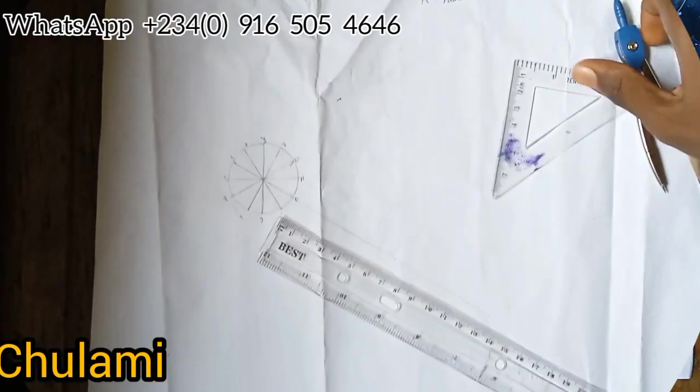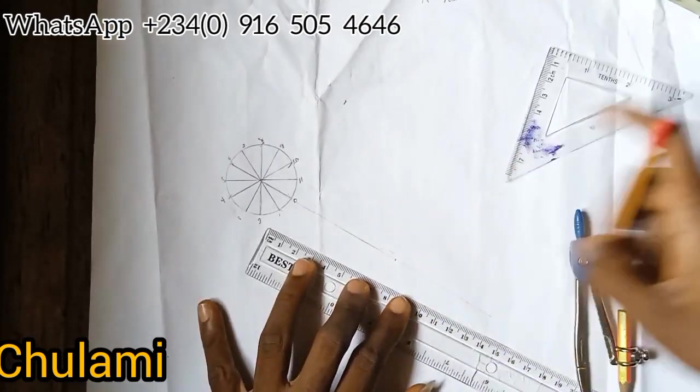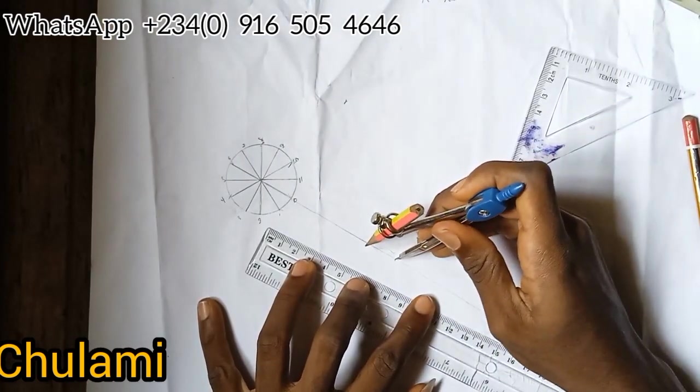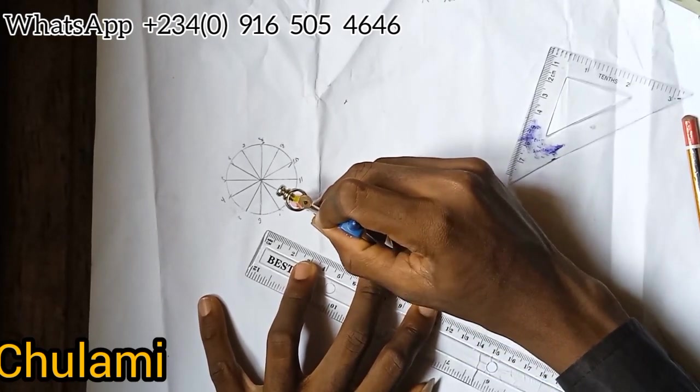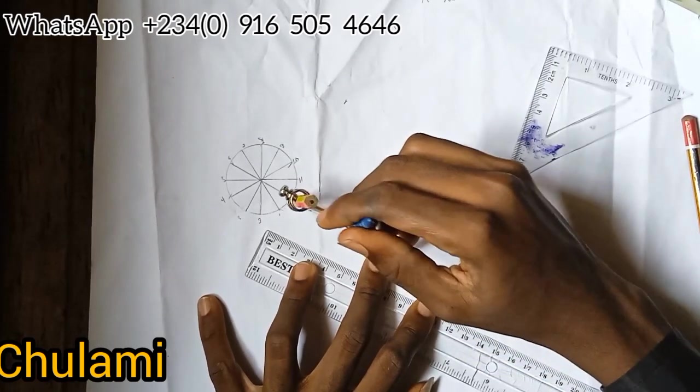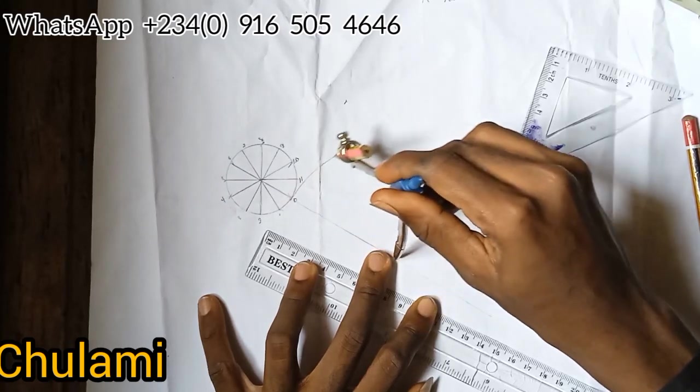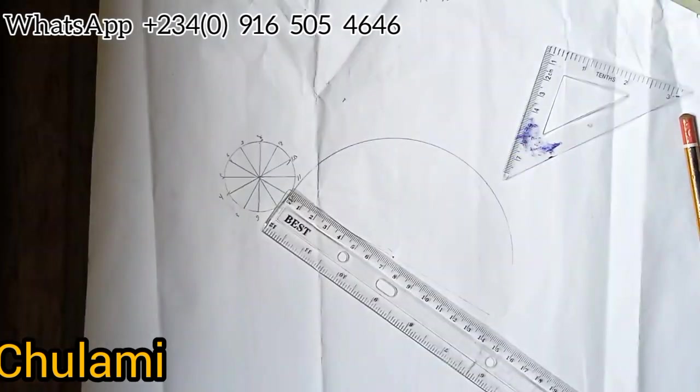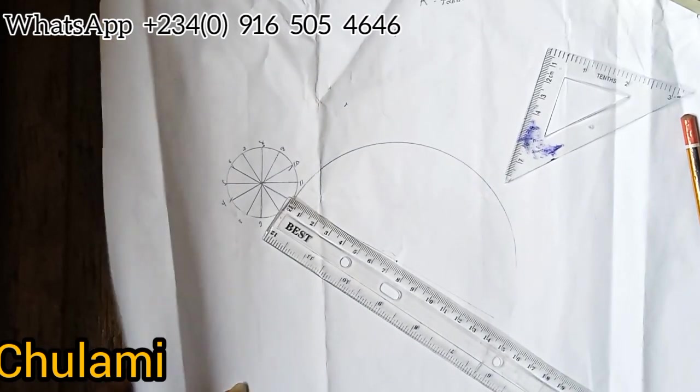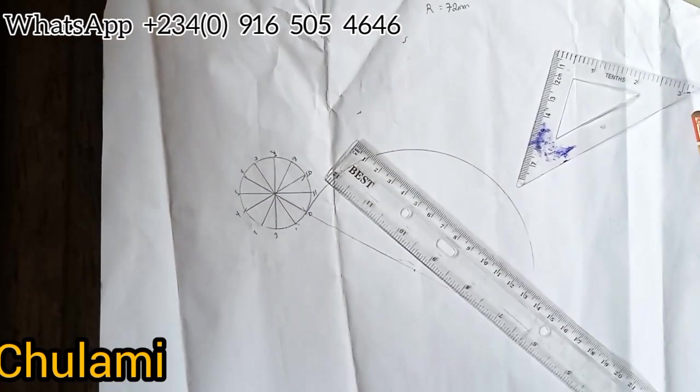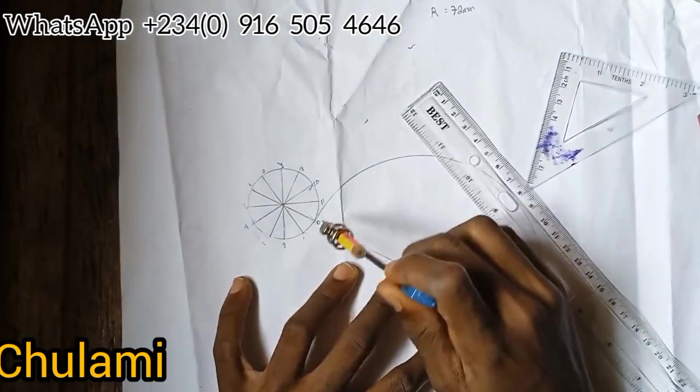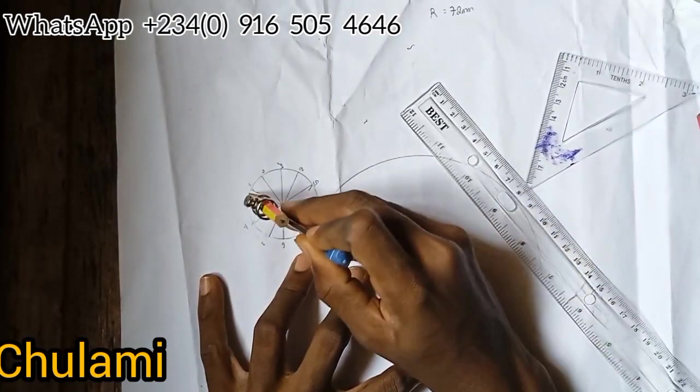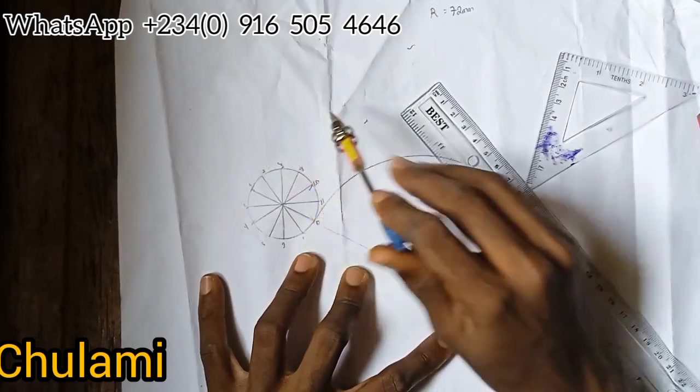I'll place my compass on this point I marked here and then I'll draw a big arc. But before you continue, I would advise you place something under your drawing paper to avoid it from slipping while you are working. I'll place at this point and get to six and I'll draw an arc.